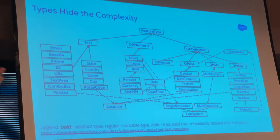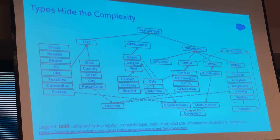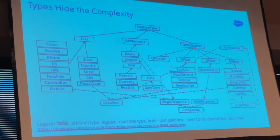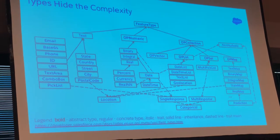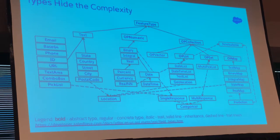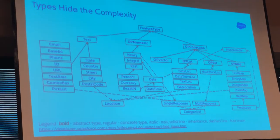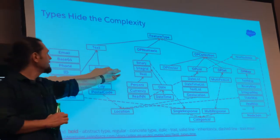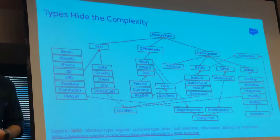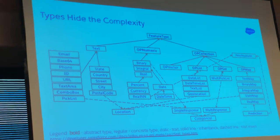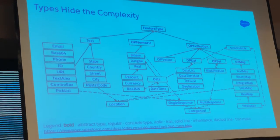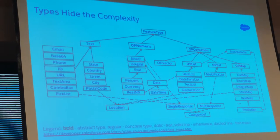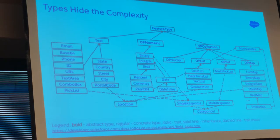We kind of took those types and built our own little hierarchy to have machine learning problems match and use them more easily. For example, a binary type here extends numeric — if you go to a Java or Scala type hierarchy, that's not the case. But for us, a binary type is just a numeric type of zero and one, so it makes sense to have this hierarchy.